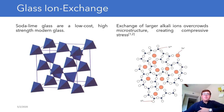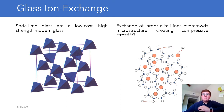Soda lime glass ion exchange is useful because it's an easy way to take an inexpensive, commonly available glass and strengthen it for a variety of purposes. Looking deeper into this process helps us better understand the diffusion process itself, how it impacts the microstructure, and how that in turn develops the material properties that we see on the macro scale.